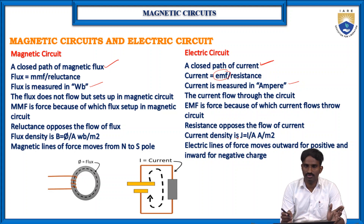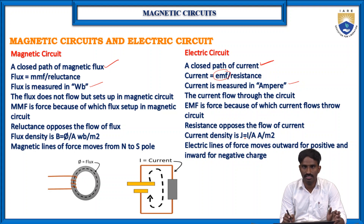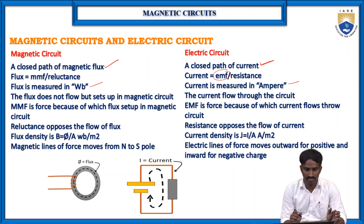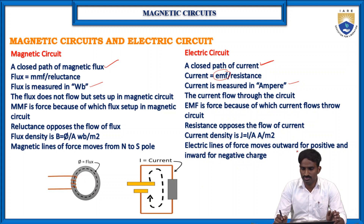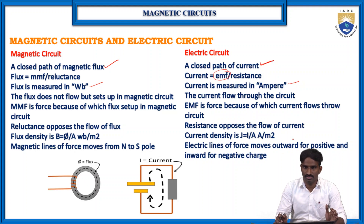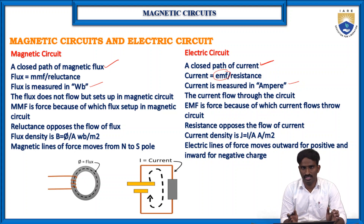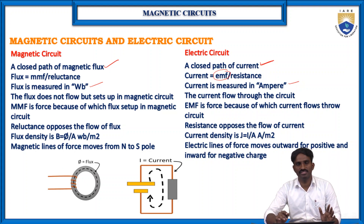Regarding current density, J equals I divided by A — current divided by the cross-sectional area of the conductor. Similarly, for magnetic flux density, B equals phi divided by A, where phi is the flux and A is the cross-sectional area of the magnetic material. Also, electrical field lines move outwards from positive charges and inwards for negative charges, while magnetic field lines move from north to south. These are the basic differences between magnetic and electrical circuits.